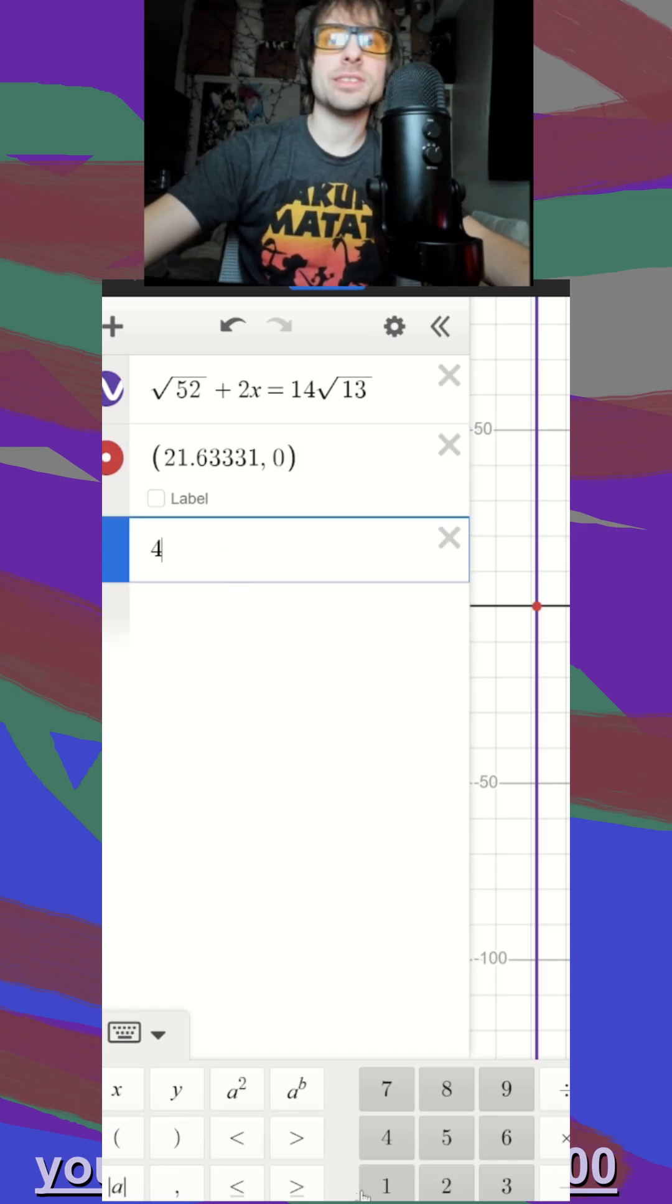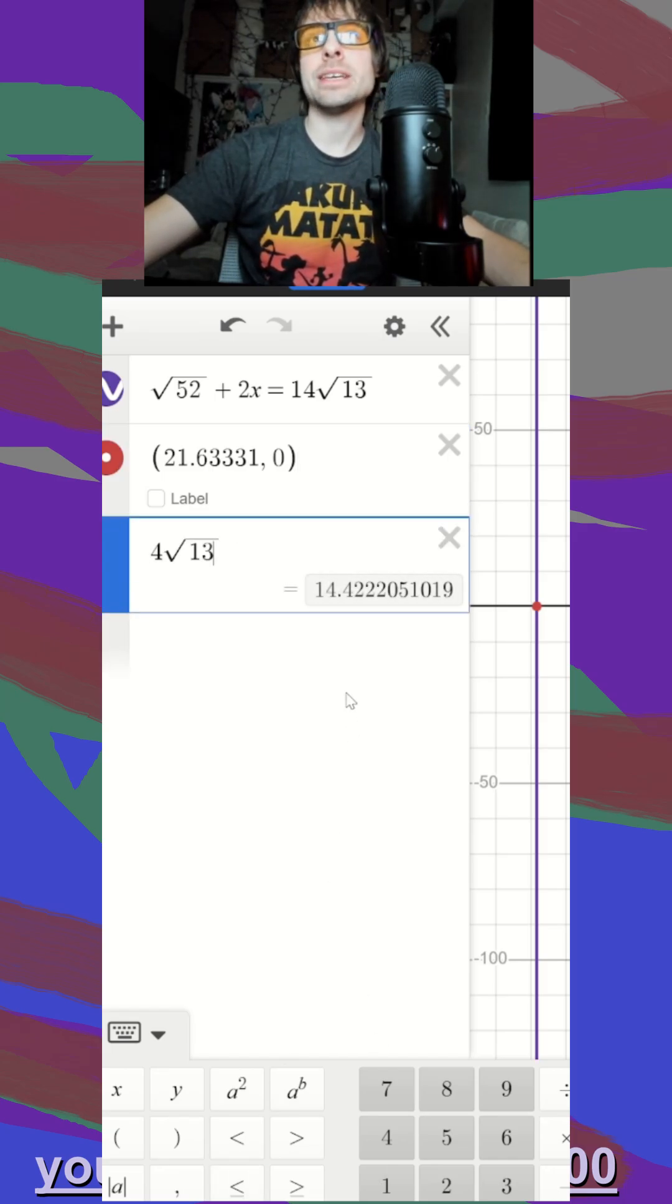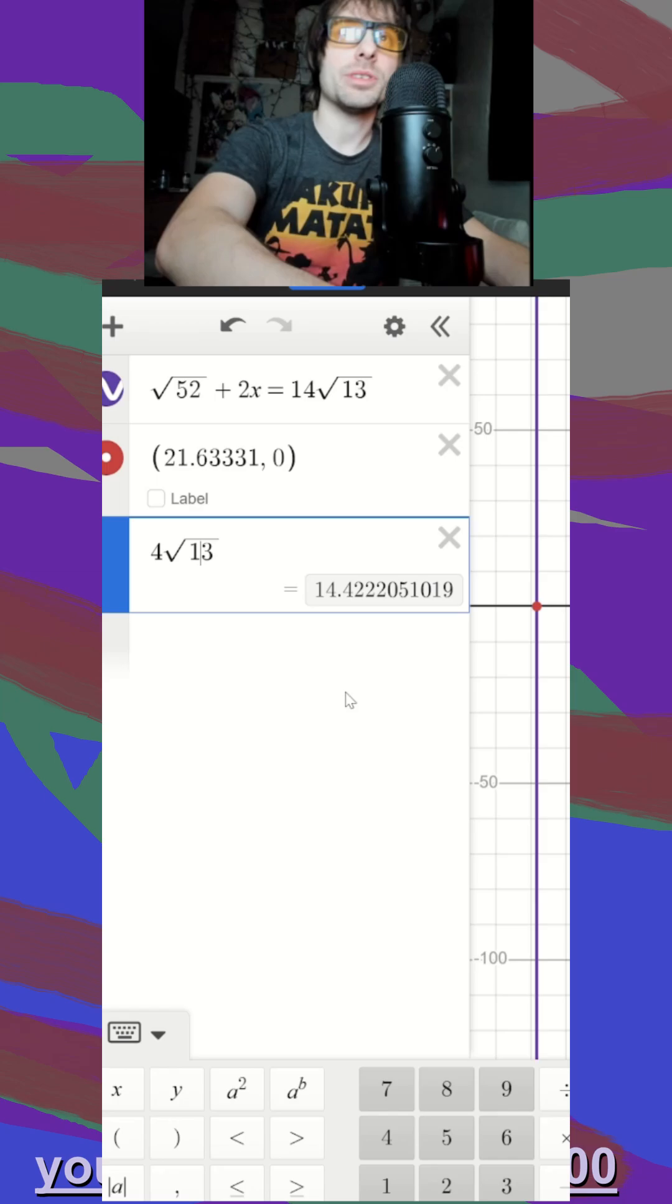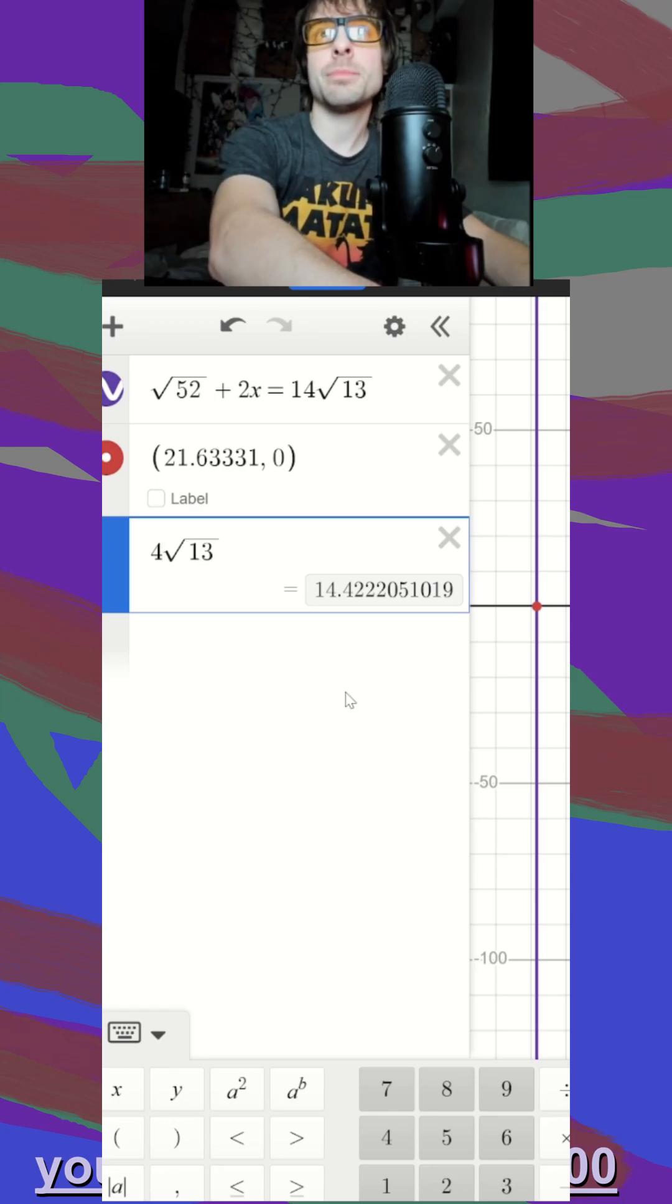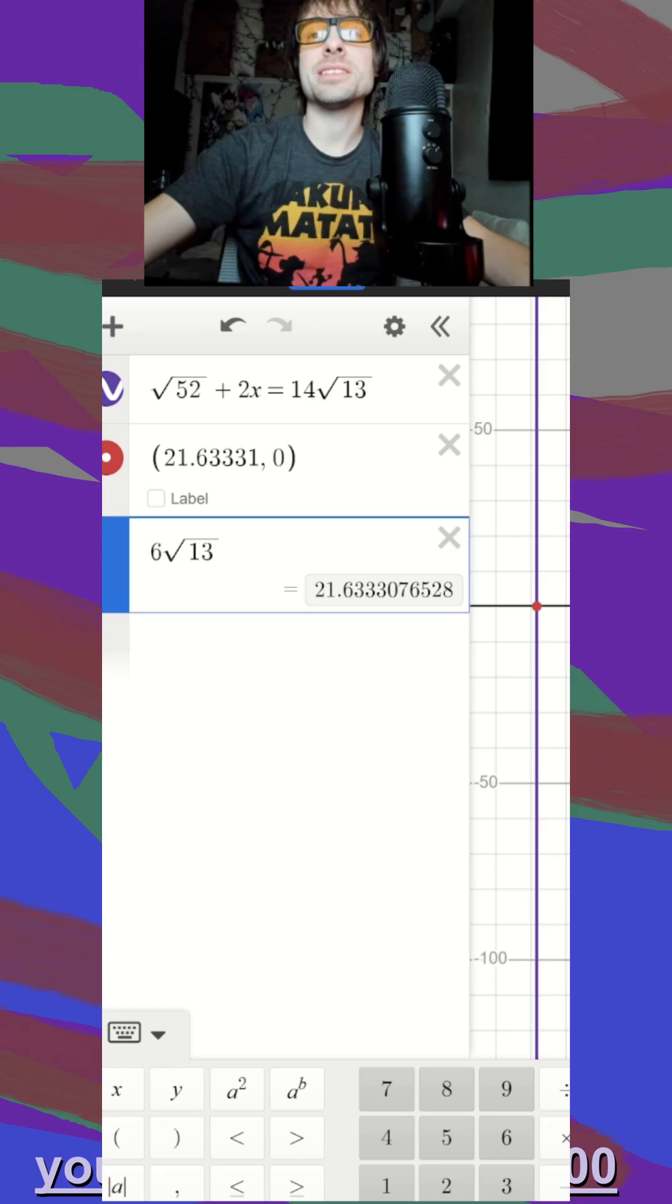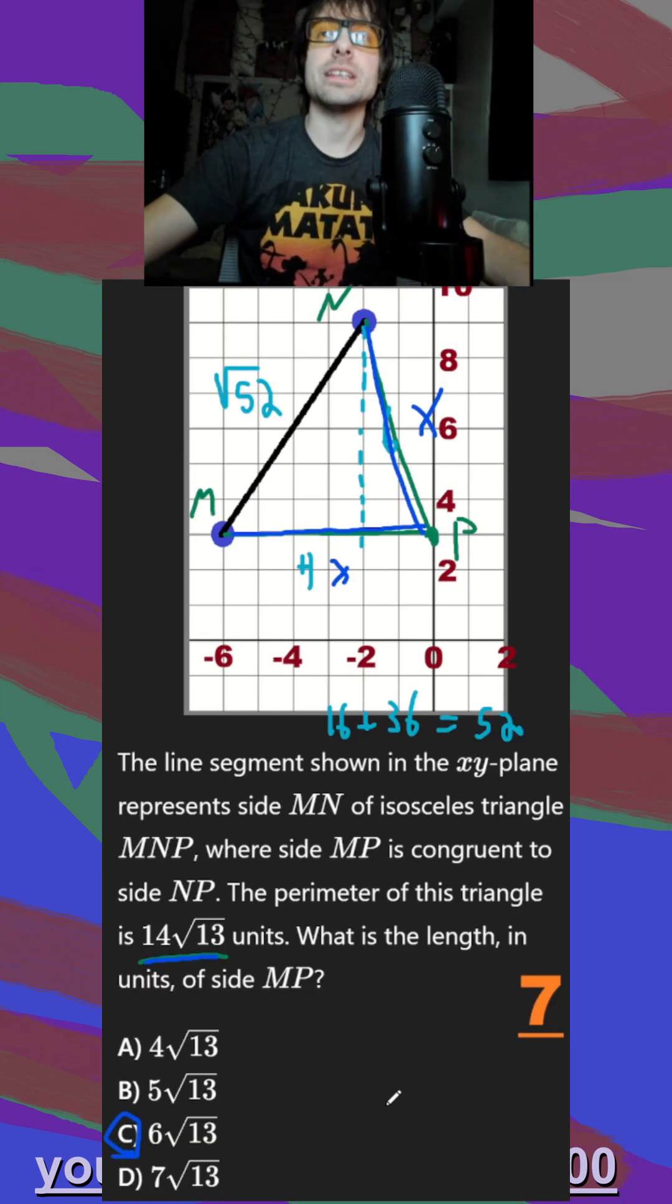And then I just go through my answer choices, and I type those until I get a decimal that matches. What's nice is I only have to change this number to go through my answers. And it looks like my answer is going to be 6√13 or letter choice C here.